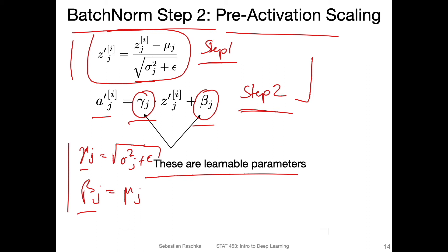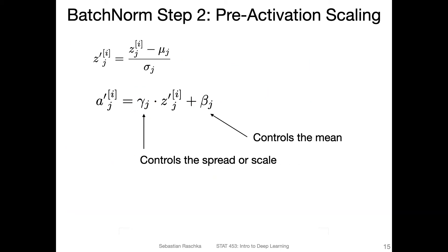And in practice it happens that this setup, step one and step two, works better than just step one alone. One simple explanation could be, for example, it might perform better because we just have additional learnable parameters. It's essentially as if we have more parameters in the network, so the network has a higher capacity.